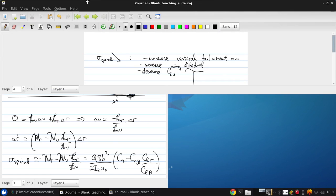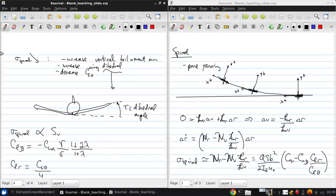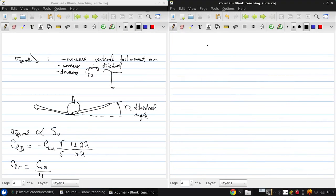Now the required yaw moment derivatives are obtained in a similar manner, but there's also now going to be a contribution from the fuselage. So CN-beta is CL-alpha of the vertical tail times the vertical tail volume coefficient, plus CN-beta of the fuselage.